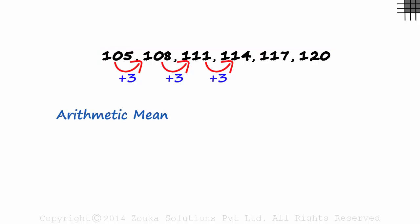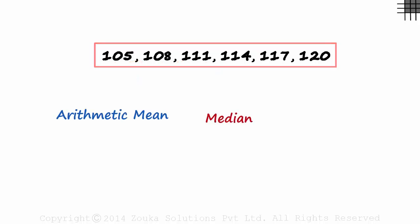Look at the next set of numbers. The set ranges from 105 to 120 in fixed intervals of 3. We want to find the arithmetic mean and the median of this set. We have seen that for evenly spaced numbers, the arithmetic mean is equal to the median.